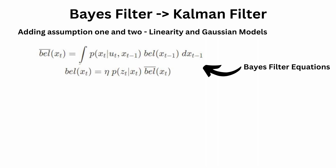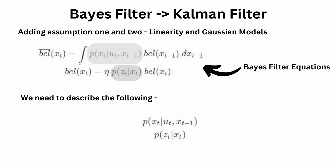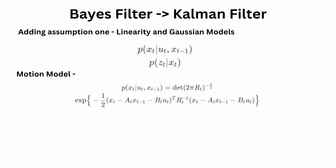These are the two equations in your Bayes filter. We need to describe two distributions for the motion model and the observation model, because belief of x(t-1) comes from the previous iteration in this recursive filter. For your motion model, after introducing the two assumptions — Gaussian distribution and linear model — your mean is A(t)·x(t-1) + B(t)·u(t), and R(t) represents your noise factor, or motion model noise. This is the final representation of your motion model after introducing the two assumptions.